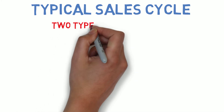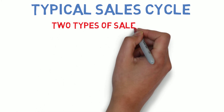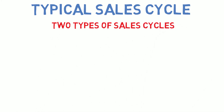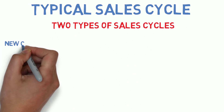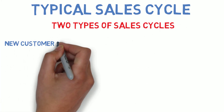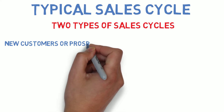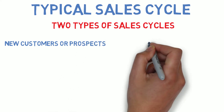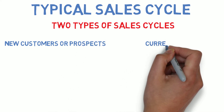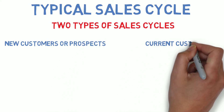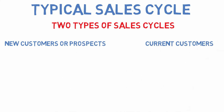They're not too far off from industry to industry, although it may vary. Now, there are two sides of the sales cycle: there's the sales cycle for new customers, or prospects, and then there's the sales cycle for current customers. And they both look similar.